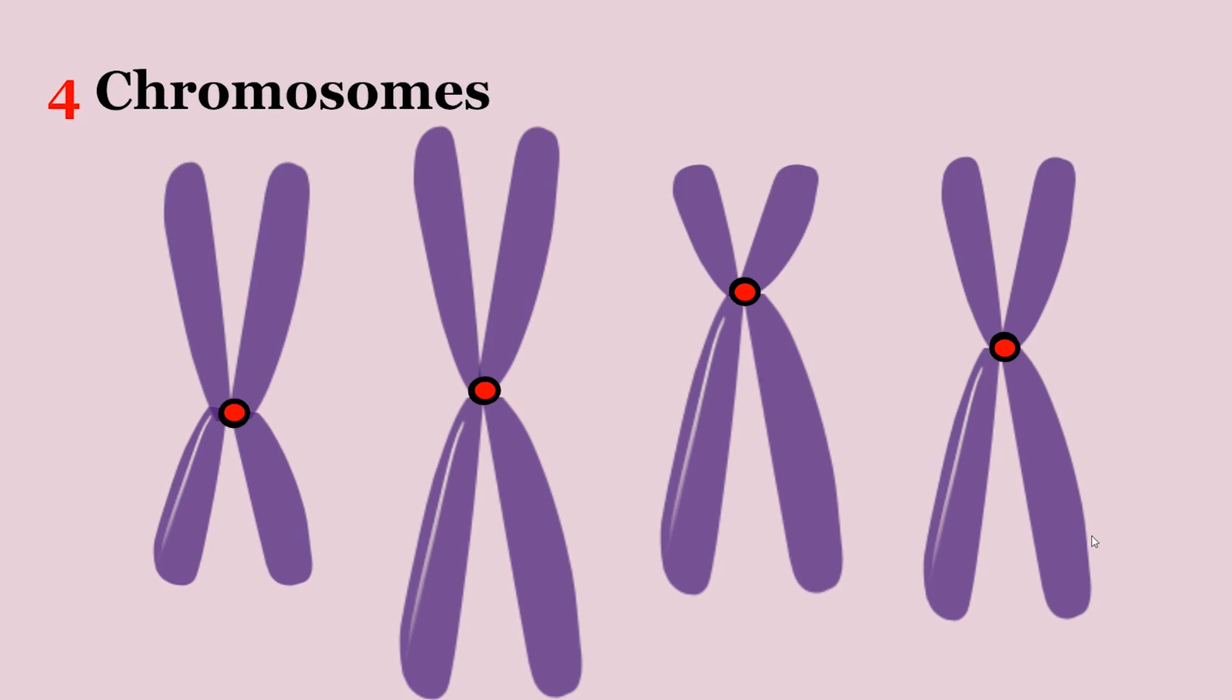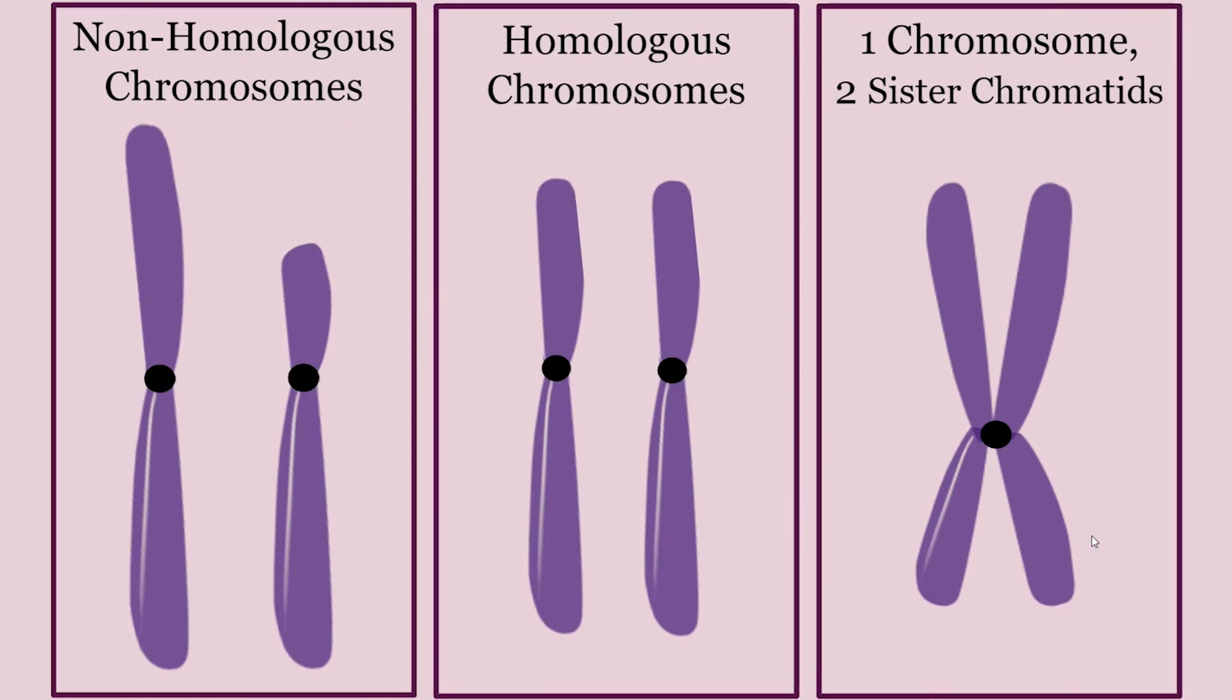The main example of this is sister chromatids, which are two identical DNA molecules that remain attached at the centromere until they are separated during anaphase in the cell cycles. This can be kind of confusing at first, but think of them as temporarily conjoined twins, DNA molecule twins.